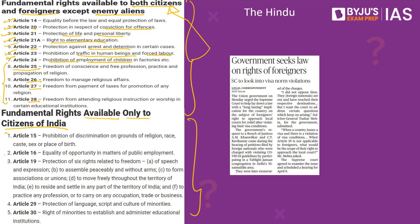But certain rights are available only to citizens of India. This includes Article 15 — prohibition of discrimination on grounds of religion, race, caste, sex, or place of birth — because foreigners can be discriminated on these grounds, especially place of birth. Next, Article 16 — equality of opportunity in matters of public employment — which is not available to foreigners, because government jobs can be reserved for Indian citizens only.